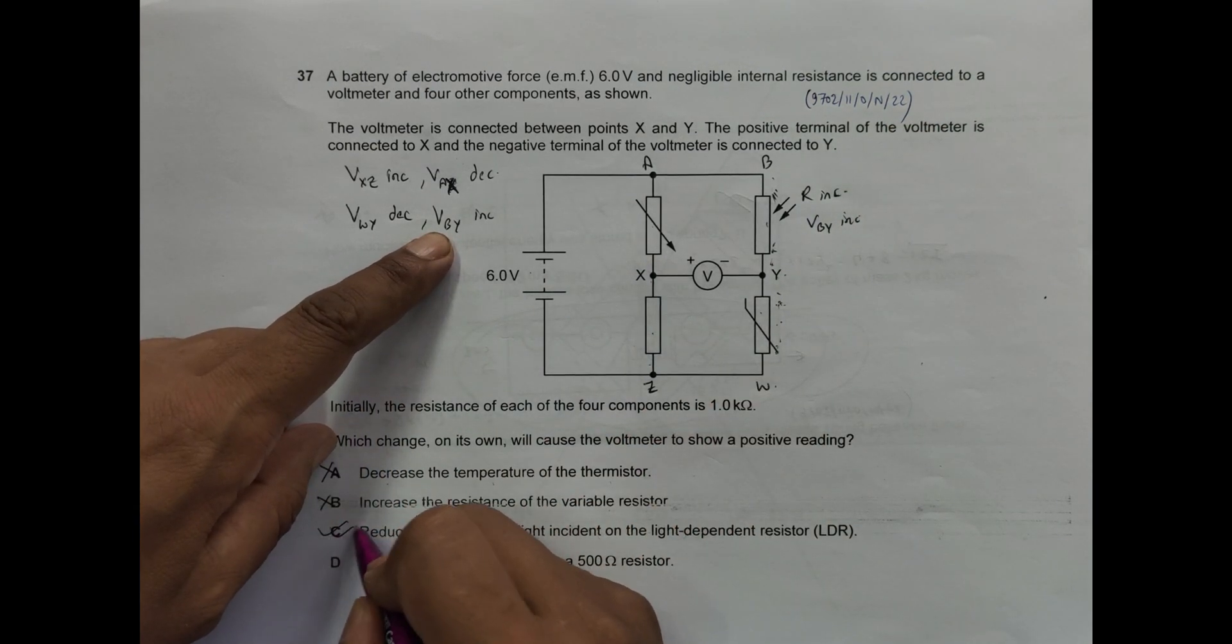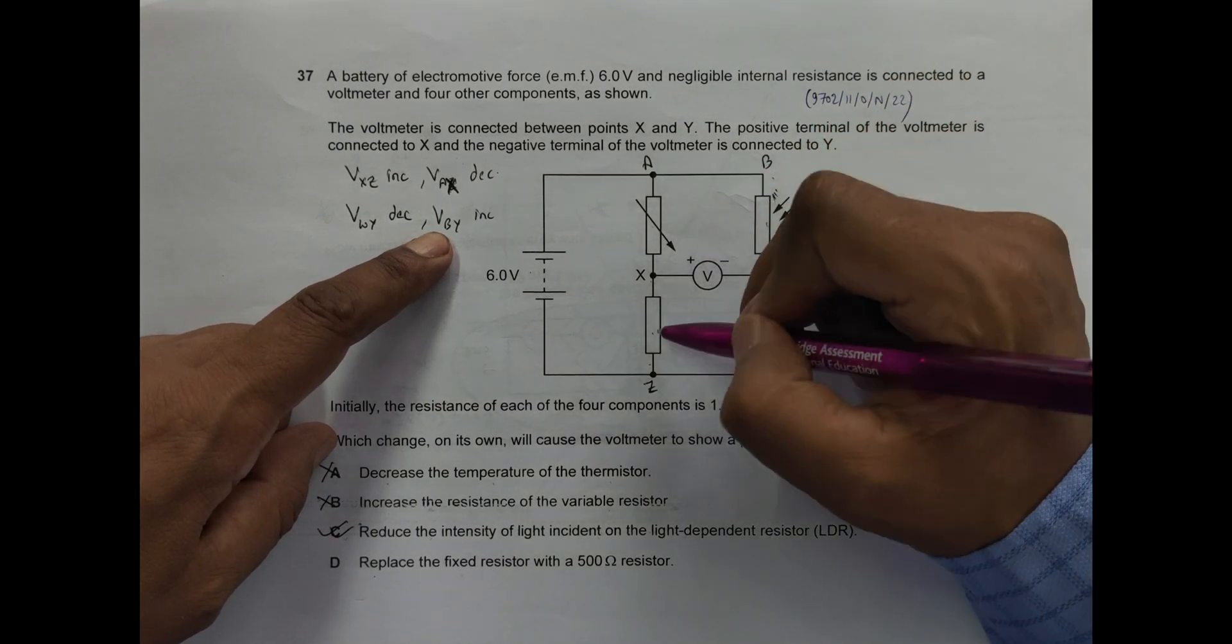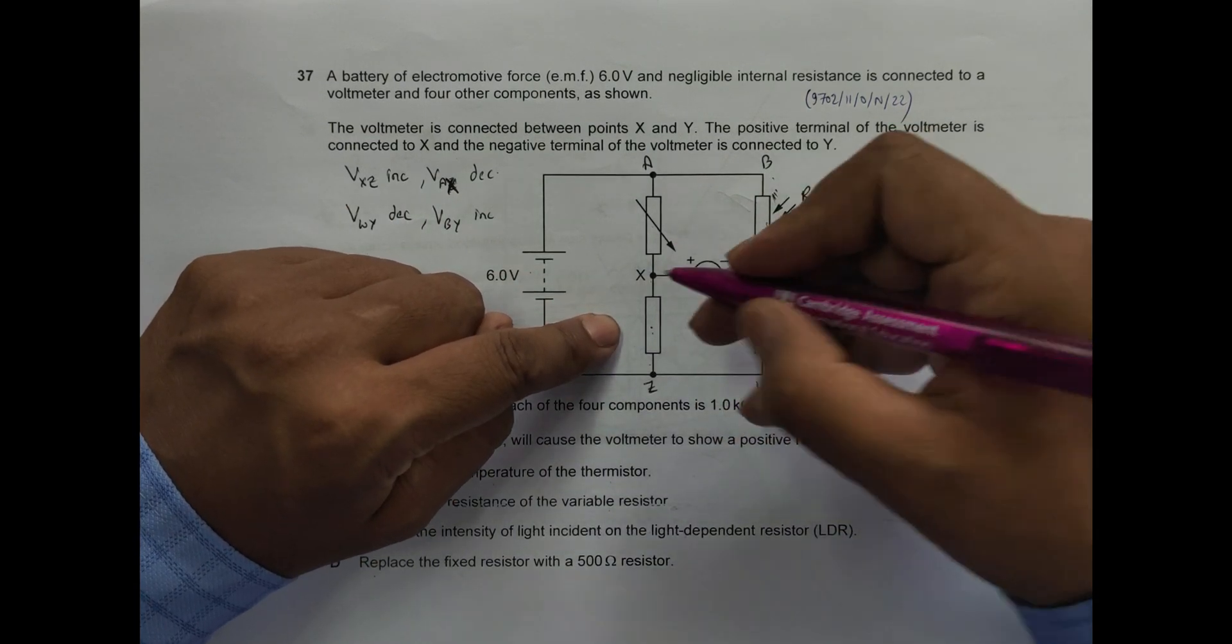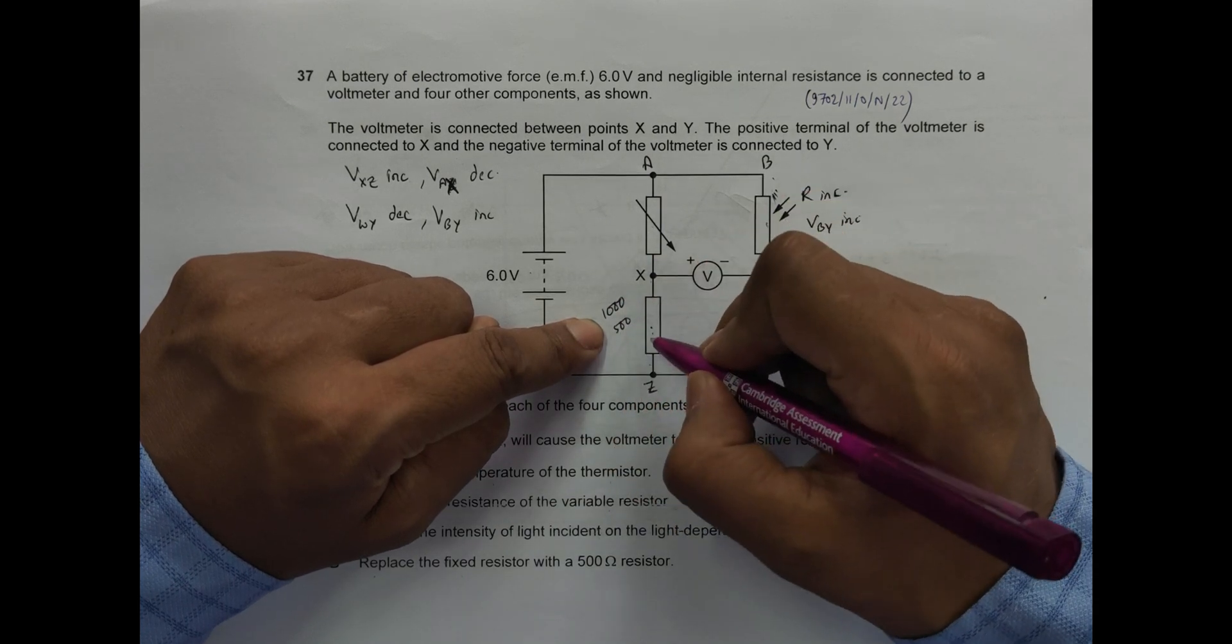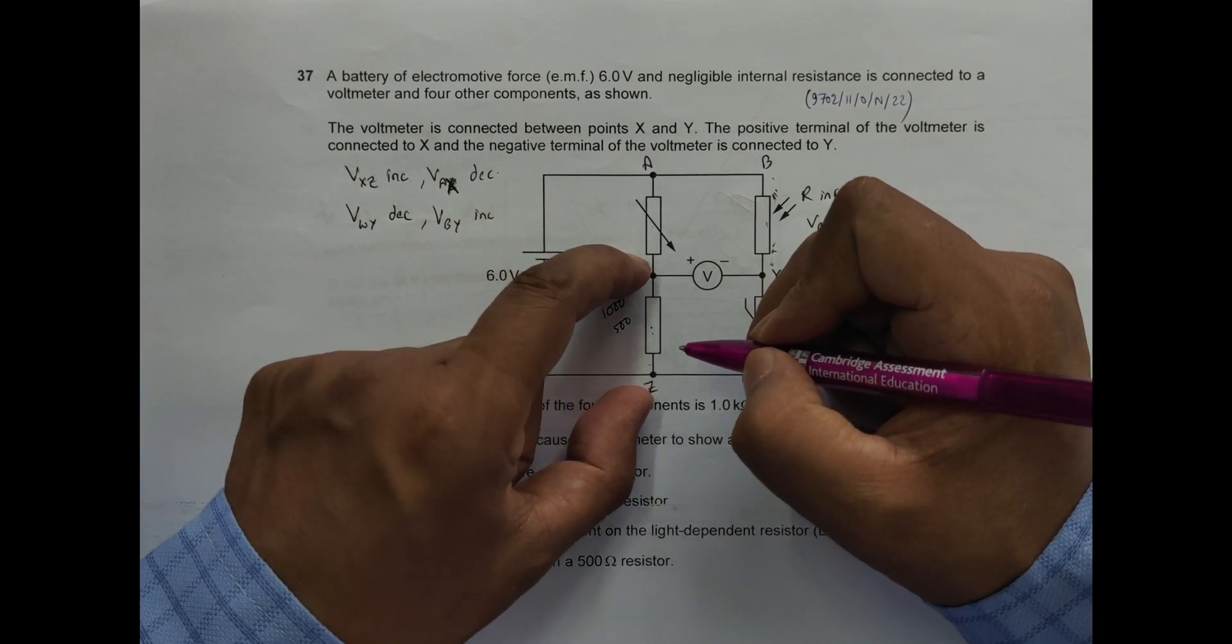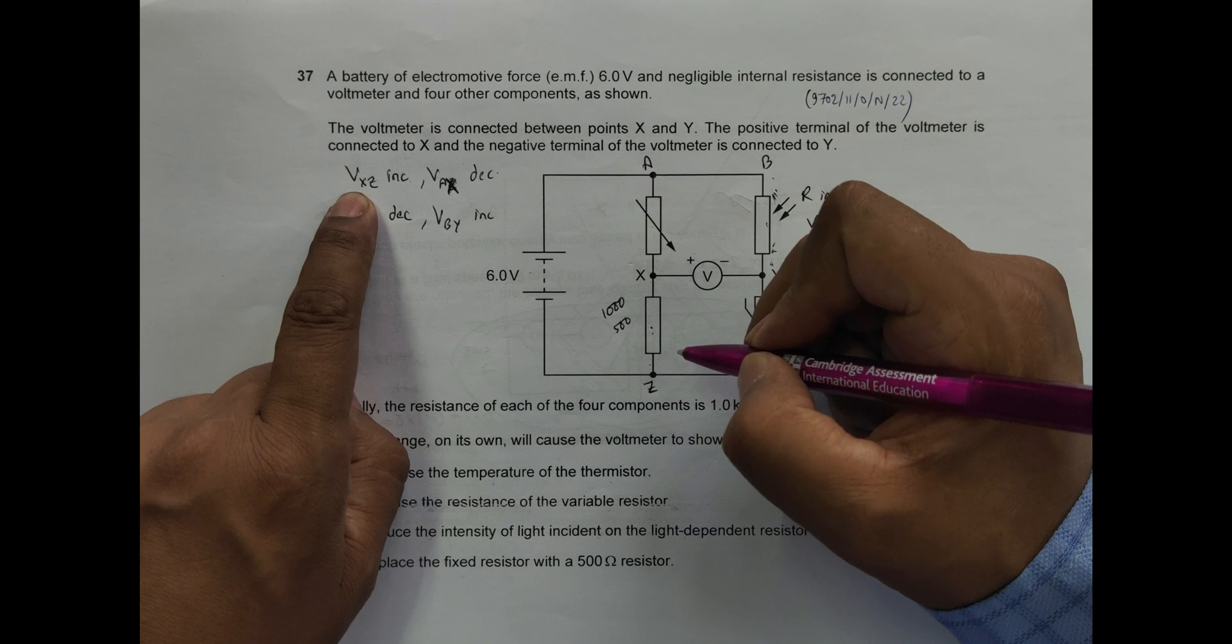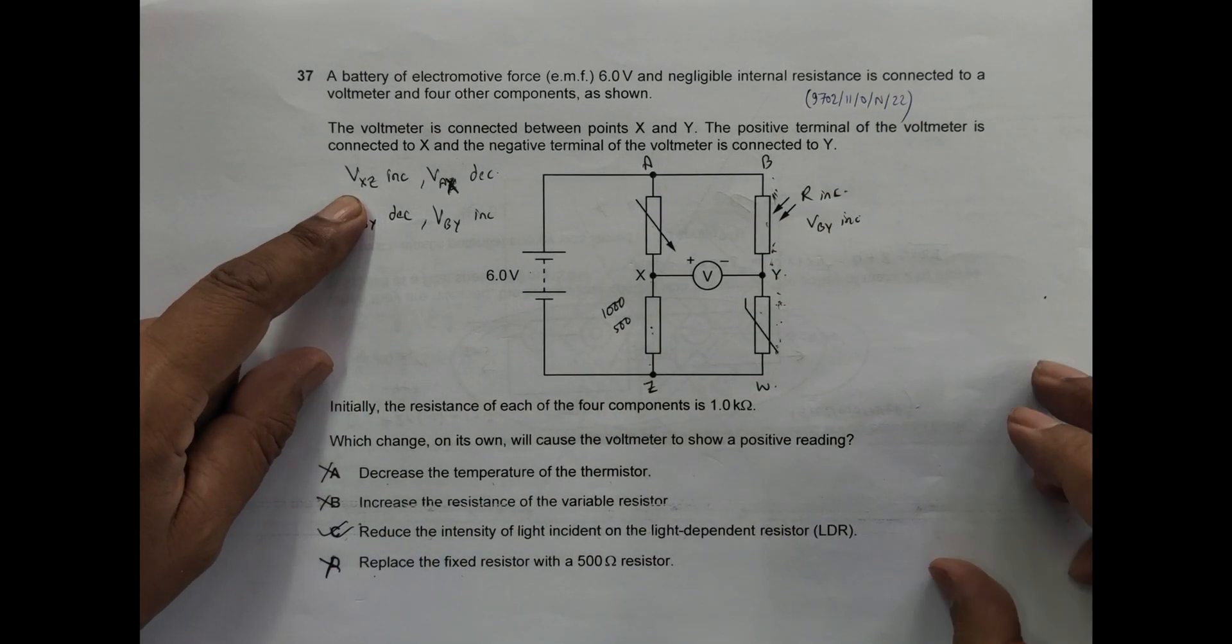And then again in D, here I have replace the fixed resistor with a 500Ω resistor. So it says replace this thing. If I replace this thing, what happens is initially it was 1 kilo-ohm, 1000 ohms. It says now 500, so this R decreases. If this R decreases, its V will decrease. Vxz will decrease, but here it says we need to increase Vxz, so this also is incorrect. So the correct choice is just C only.